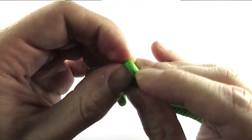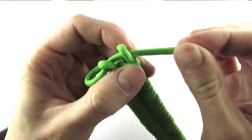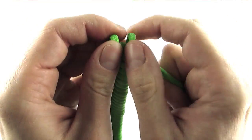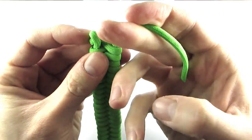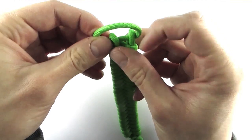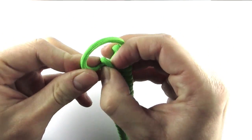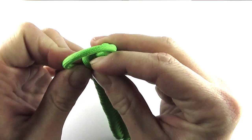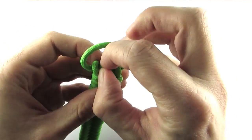But I wanted to show you how it's done without tools. So you basically feed it through both of the loops, and then form your own loop by going back and again through both of these loops here.